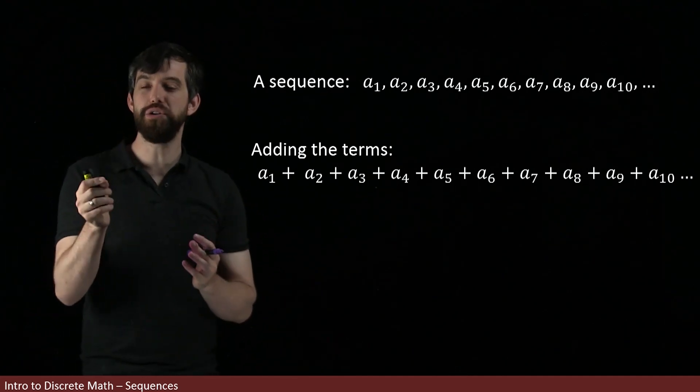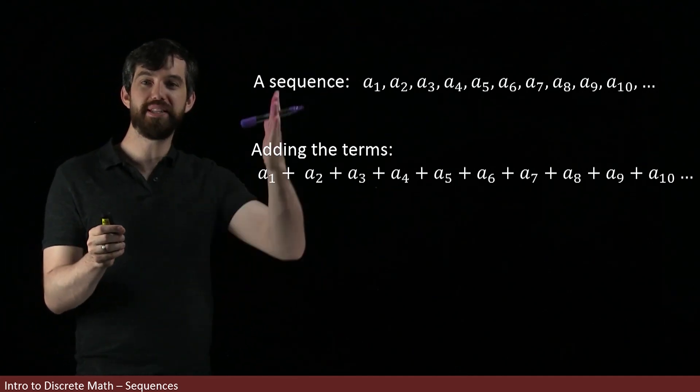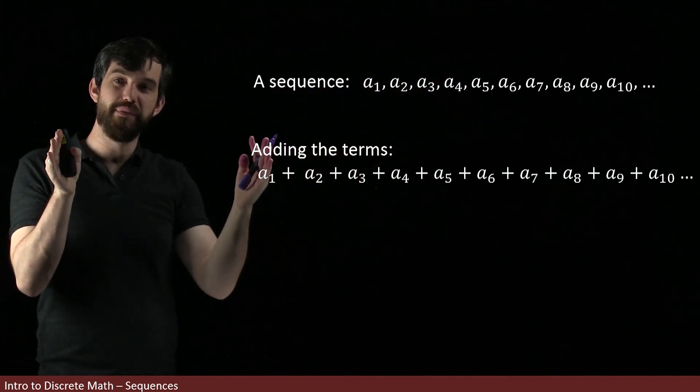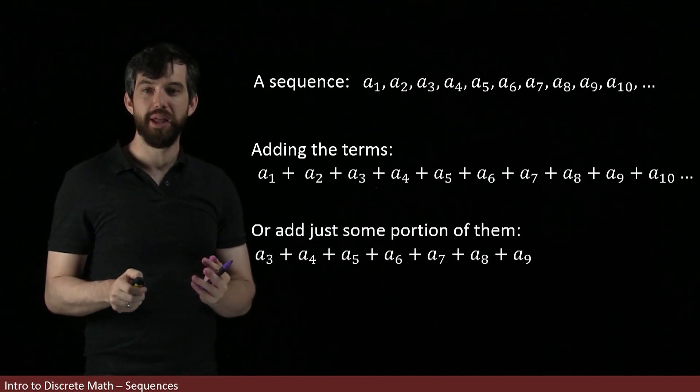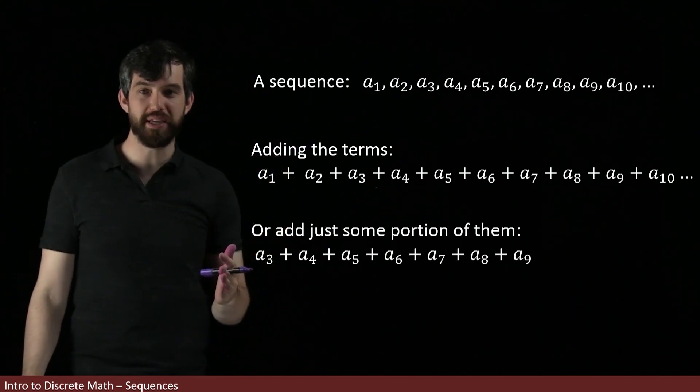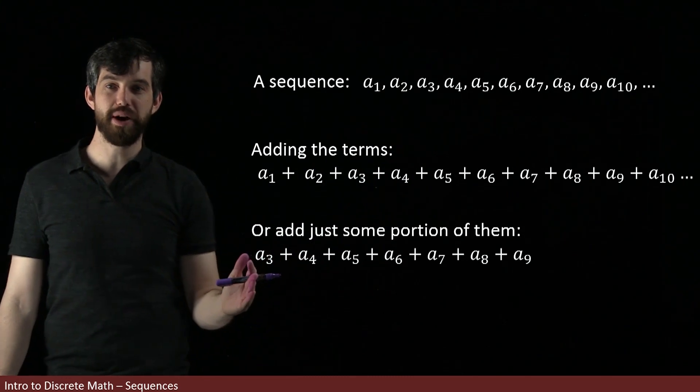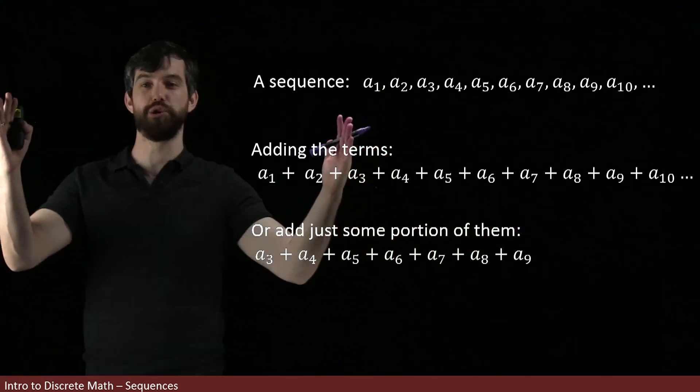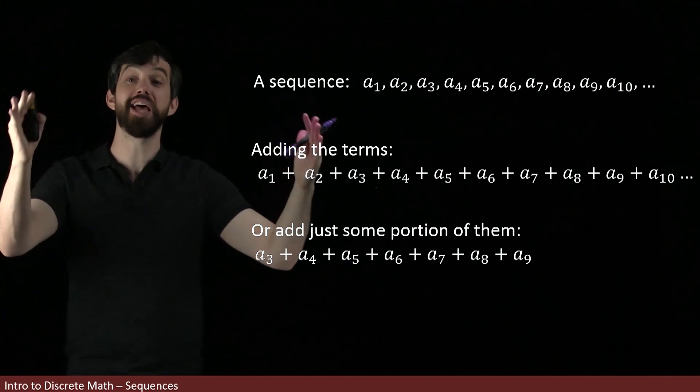we're going to be most interested in what happens if out of this infinite sequence, we just choose to add up some finite number of them. So, for example, maybe what I'm interested in some problem is just not adding the entire sequence, but I want to take a3 plus a4 all the way up to adding up a9, and that's the group that I want to sum up.